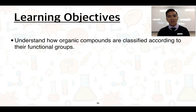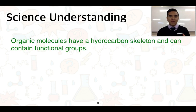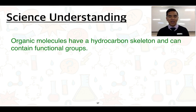In this next part we're going to understand how organic compounds can be classified according to their functional groups. So far we've seen this in the form of alkenes and alkynes and how they contain specific functional groups. I'm going to take you through an example in a moment looking at alcohols. This video will relate to the science understanding that organic molecules have a hydrocarbon skeleton and can contain functional groups.